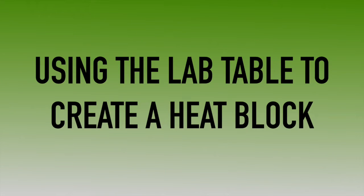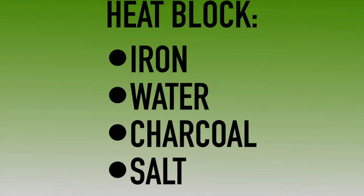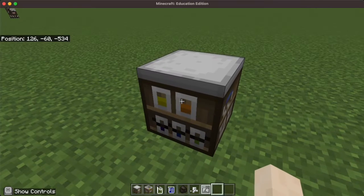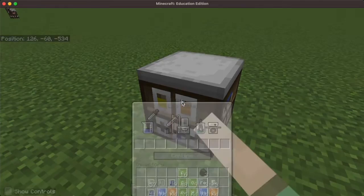We are going to use a lab table to create a heat block, which is something you can't find in your inventory. A heat block consists of iron, water, charcoal, and salt.